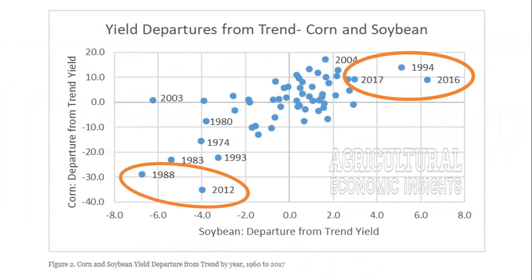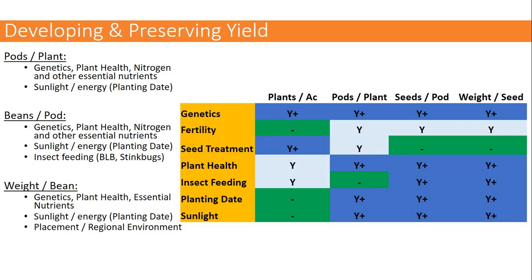Environment will dictate what the yield response is — yield is the variable about how that crop experienced that year. Years that have good corn growing environments tend to also have good soybean yield environments, like 1994 and 2016–17. The environment dictates yield potential, but it's up to us to establish a broad base so when the environment allows, we can take advantage of it.